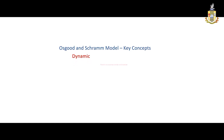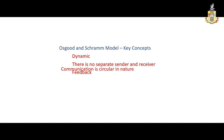Key points of Circular Model of Communication: it is dynamic and there is no separate sender and receiver. The central feature of this model is feedback. Communication is circular in nature.